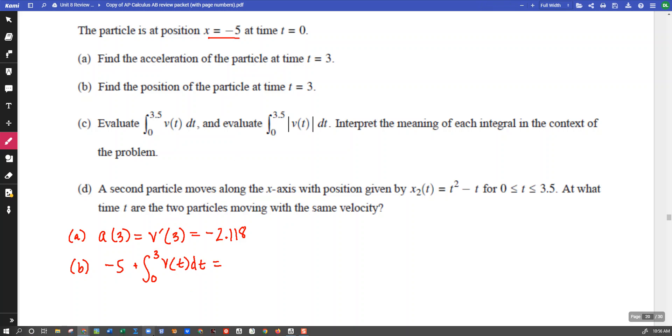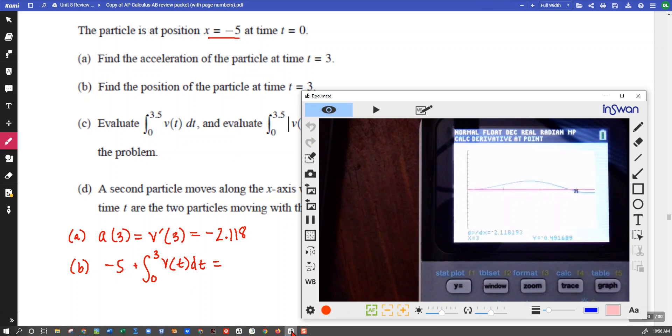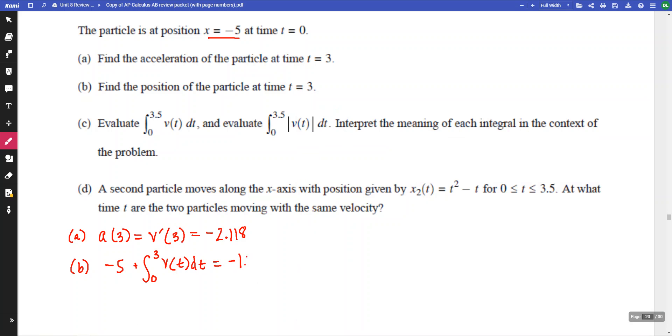So on our calculator, we can set that up. We have negative 5, plus our change from 0 to 3 in position. And the change in position is going to be given by the integral of velocity. And so my position then is at negative 1.760. So negative 1.760. That is the position of the particle.